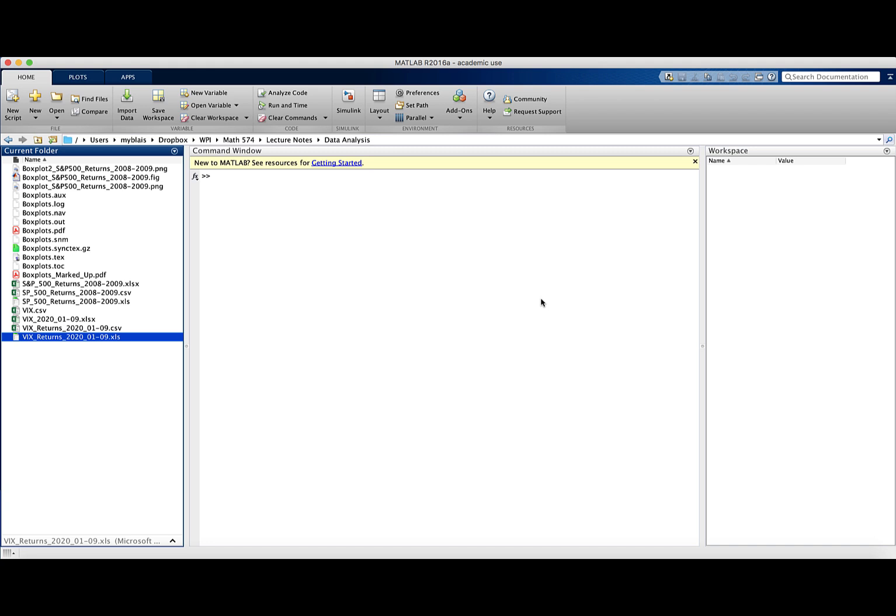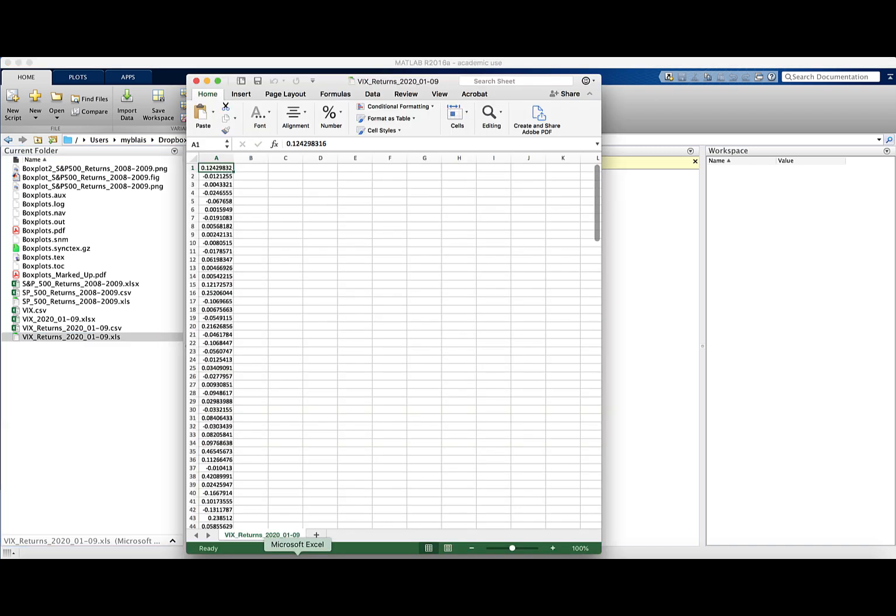So here we have MATLAB open and in an excel file we have daily net returns on the VIX index for the first nine months of 2020, so during the beginning of the COVID-19 crisis. And we have just those daily net returns in this column here. And notice that this is actually an excel file but it's an xls extension not the xlsx.